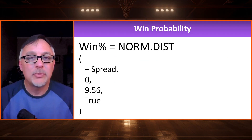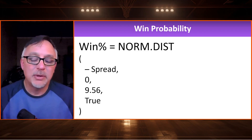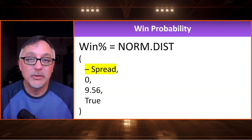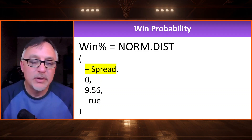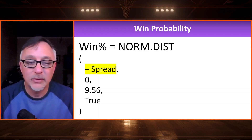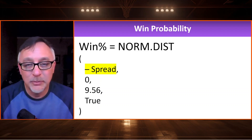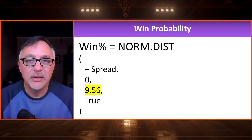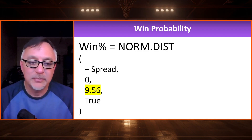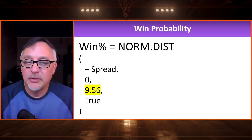What about the win probability? That's one more formula that's not easy to calculate, but we can put it in a spreadsheet. Basically, we use the spread — which is the point differential — and put a negative in front of it so the favorite has a positive number. We use a normal distribution function (NORM in Excel), with zero as the mean and the standard deviation of point differentials, which I calculated to be about 9.56 points. Setting the last argument to TRUE gives us the cumulative probability — that's the probability of this team winning the game given that spread.